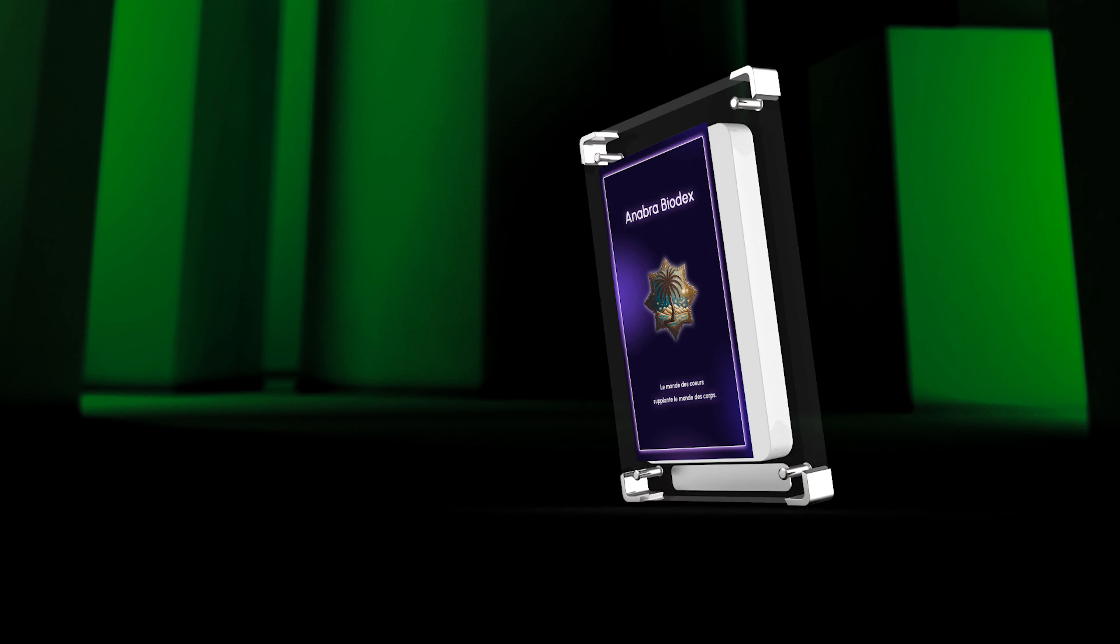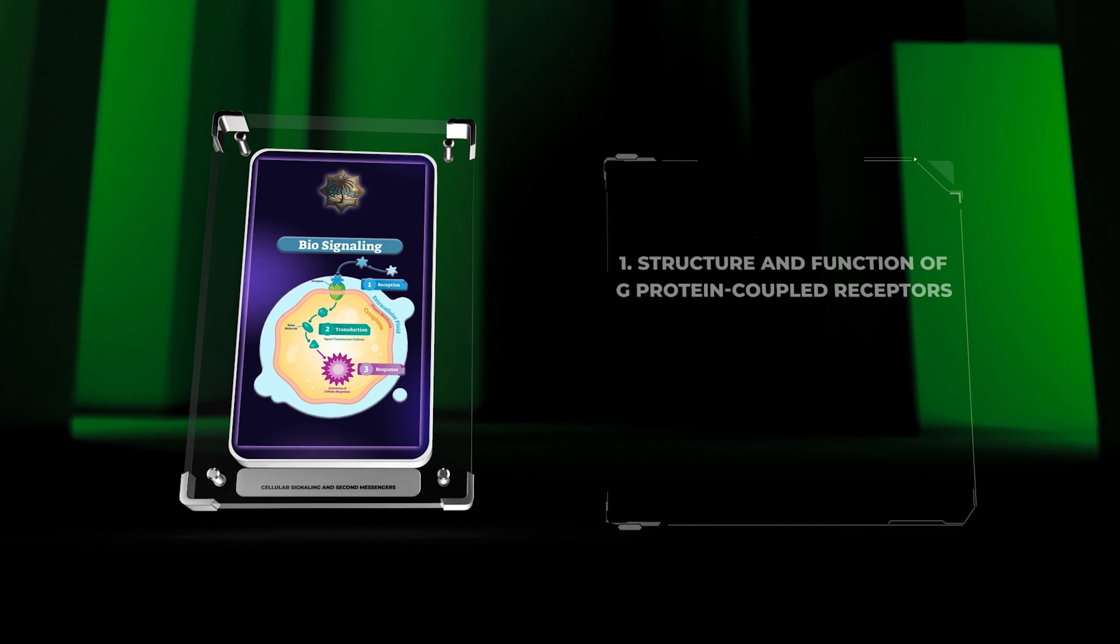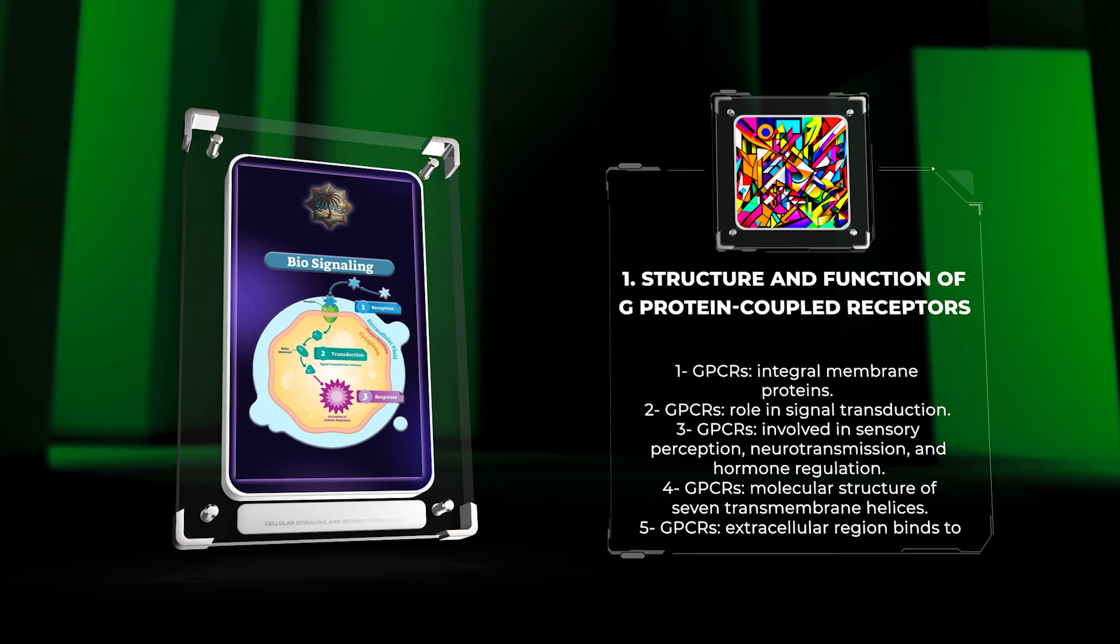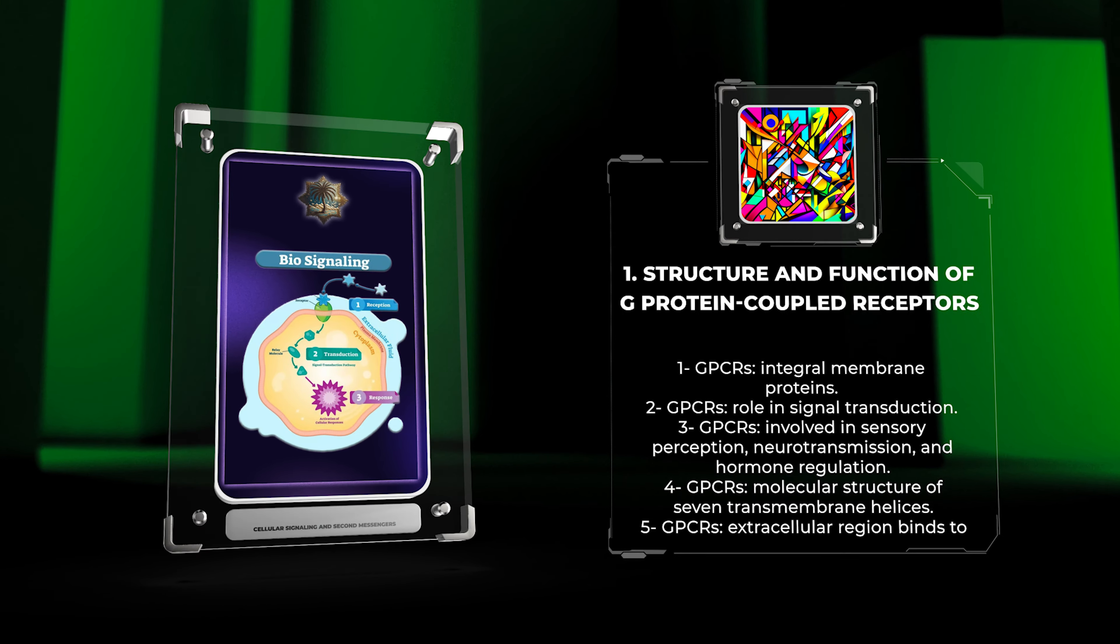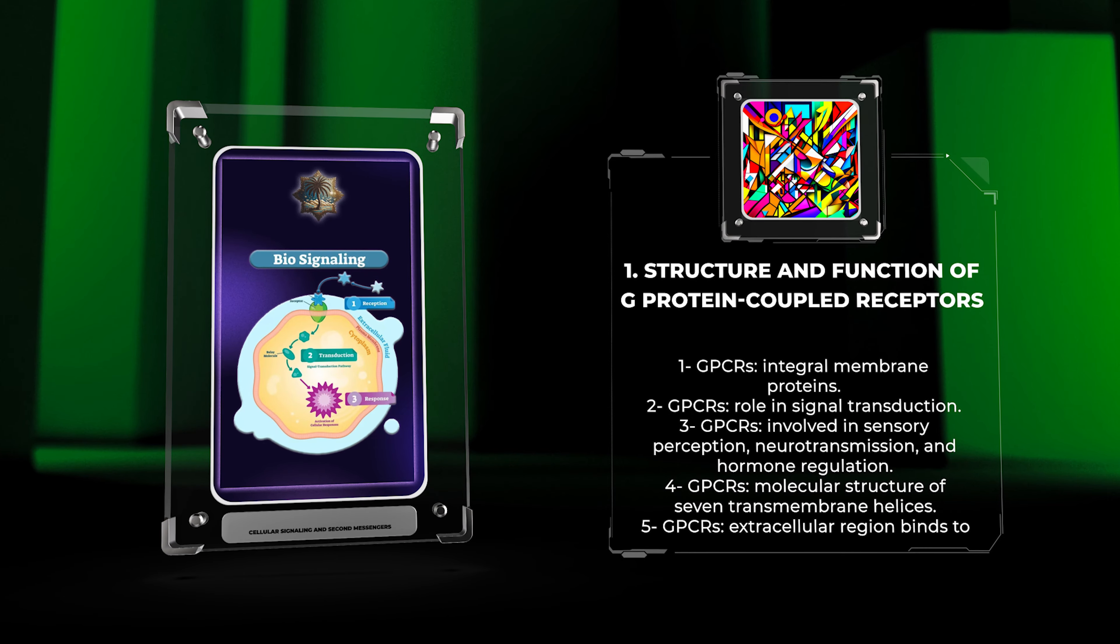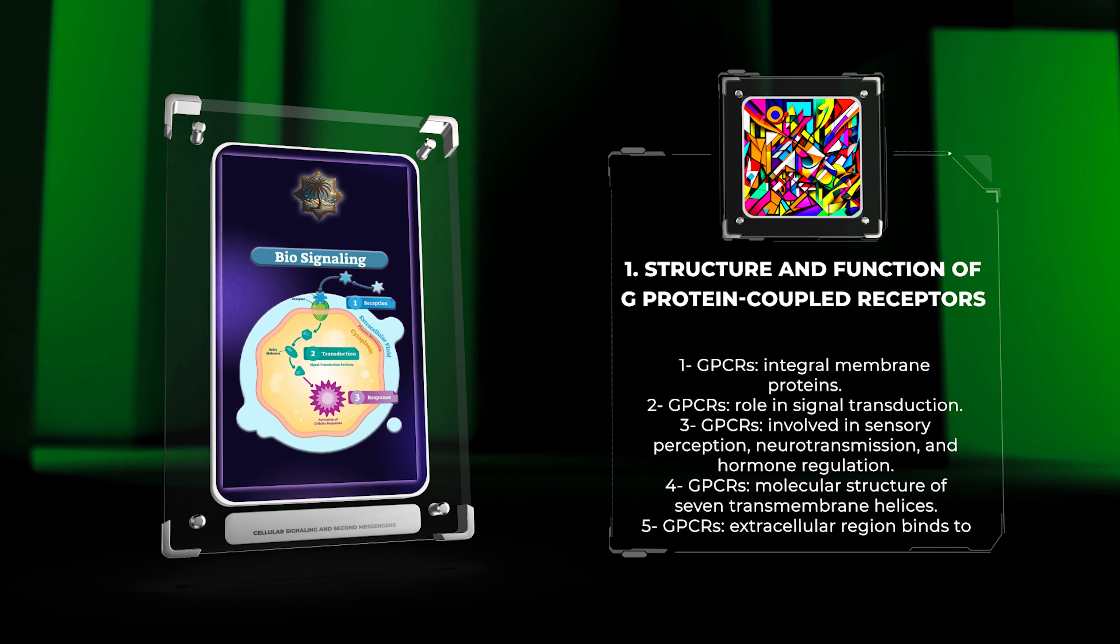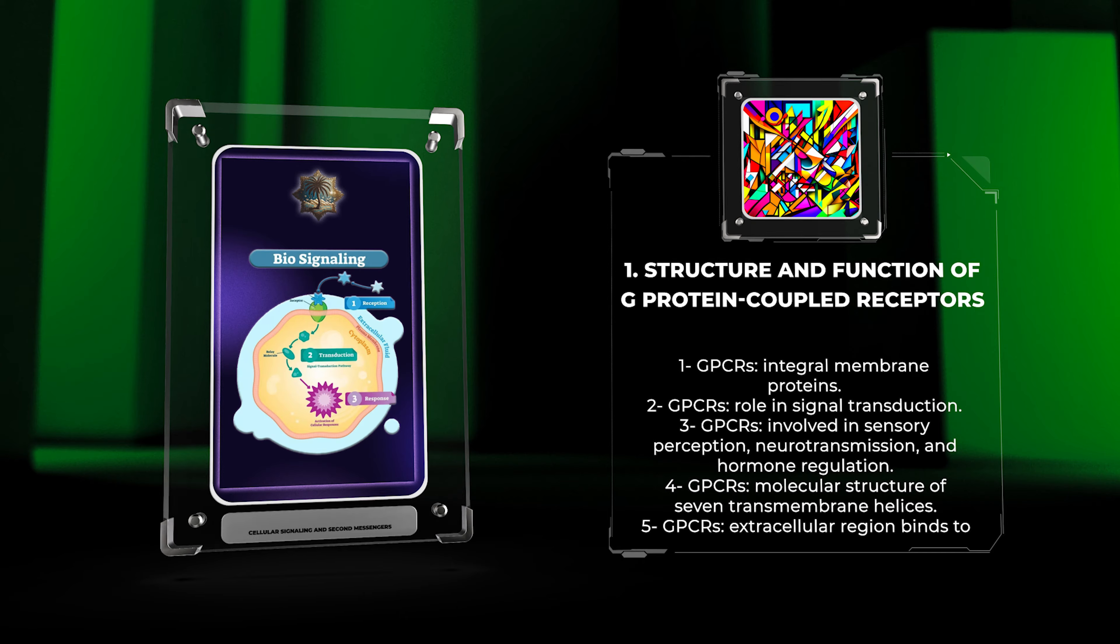G-protein-coupled receptors, GPCRs, are integral membrane proteins that play a central role in signal transduction. They are involved in a wide range of physiological processes, including sensory perception, neurotransmission, and hormone regulation.